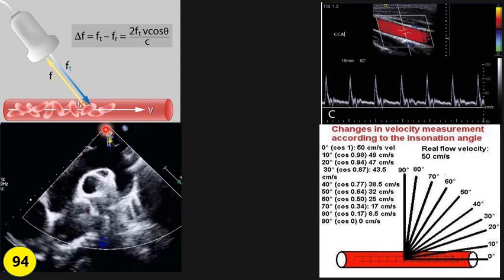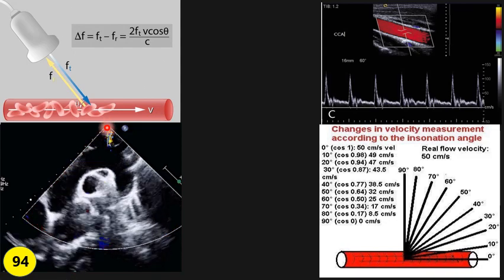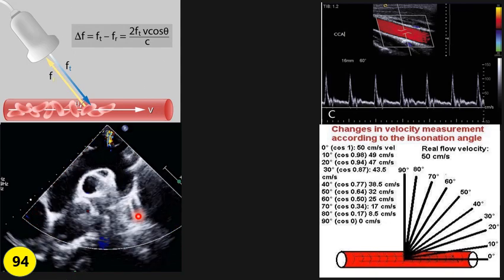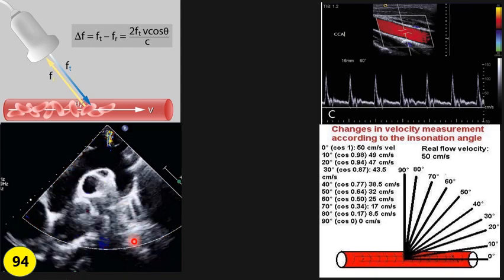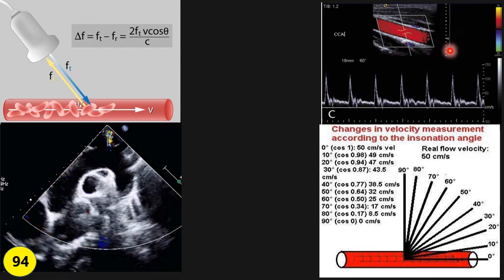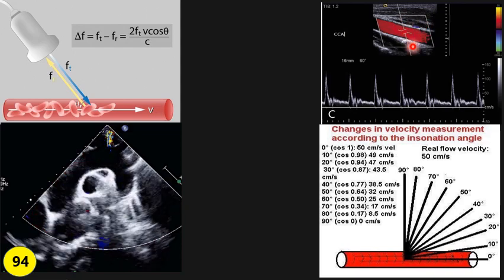In echo, we can almost always make the blood flow direction parallel to the Doppler sound wave at the important spots. So in echo we don't use angle correction or a steering box, but in vascular we use a steering box and angle correction to fix that problem.